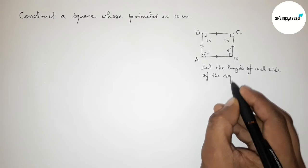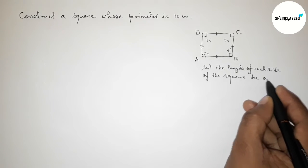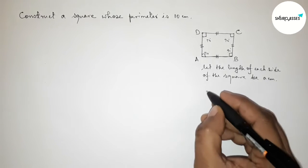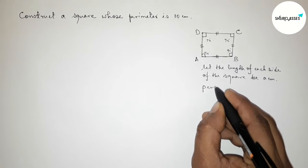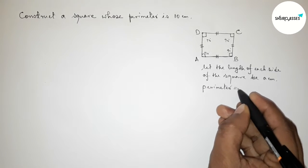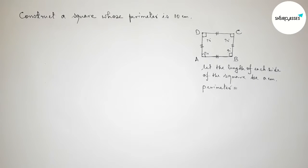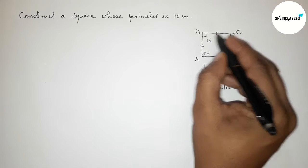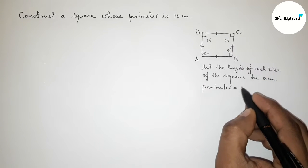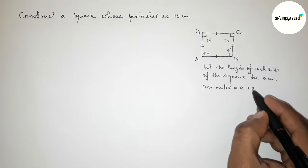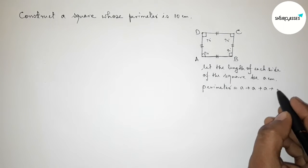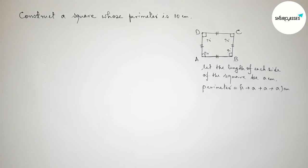Next we have to find out the perimeter. Perimeter equals the sum of all sides: a + a + a + a, which gives a total of 4a centimeters.